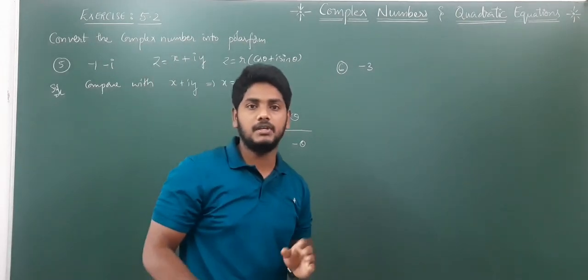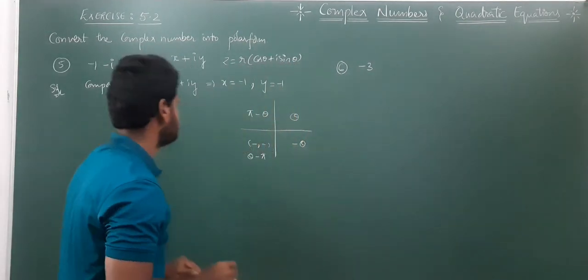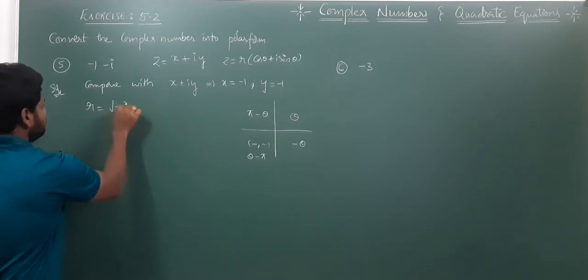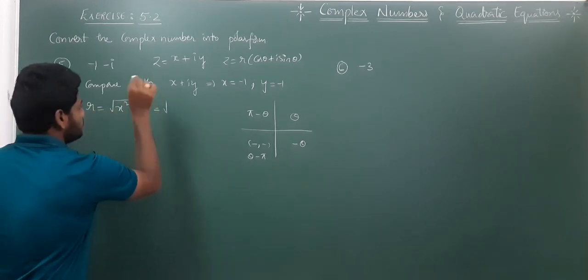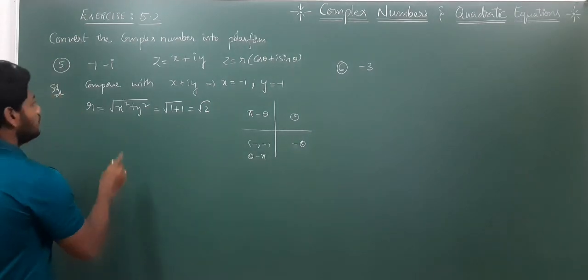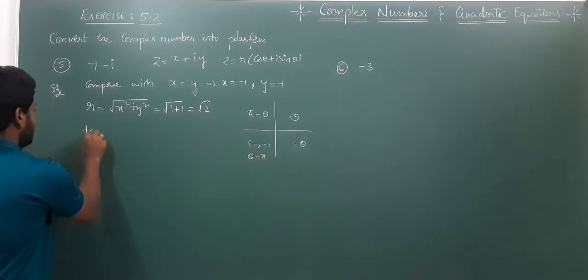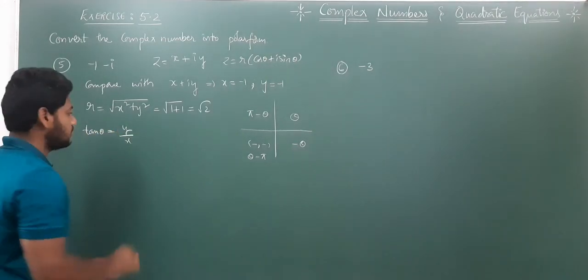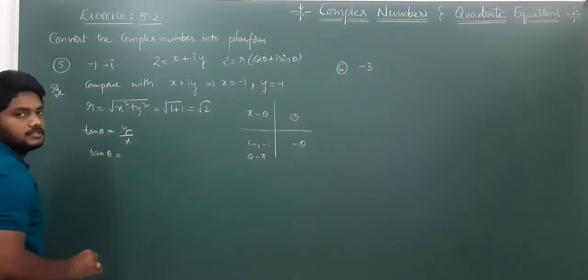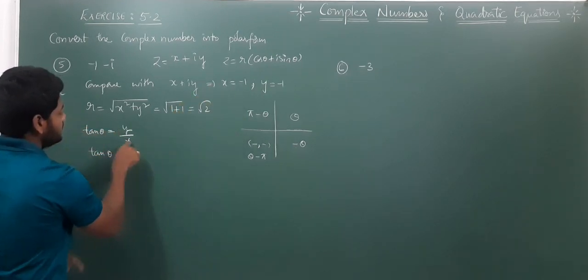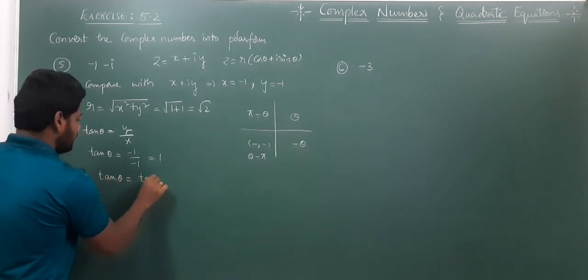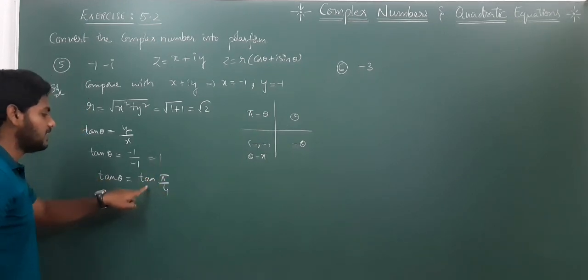The argument θ must lie between -180° and 180°. First, we find R = √(X² + Y²) = √((-1)² + (-1)²) = √(1+1) = √2. To find θ, we use tan θ = Y/X. Here Y = -1 and X = -1, so tan θ = -1/-1 = 1.